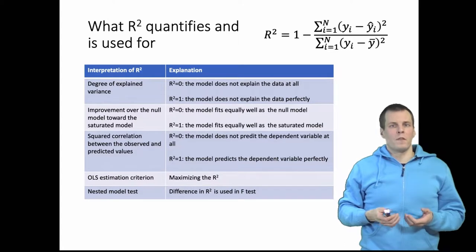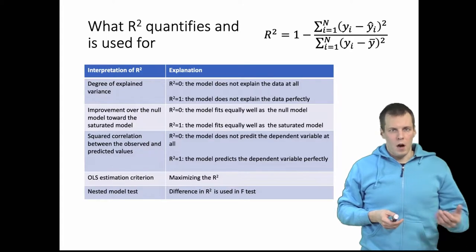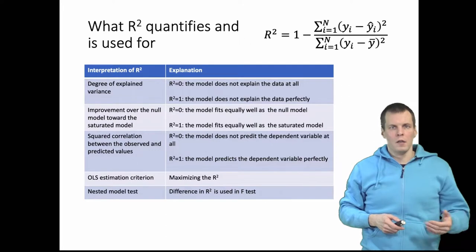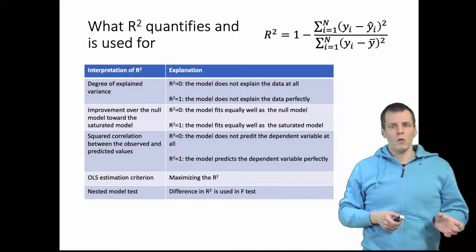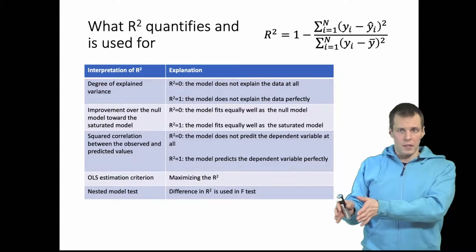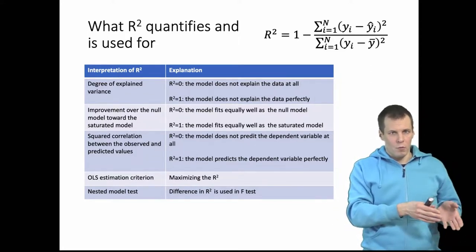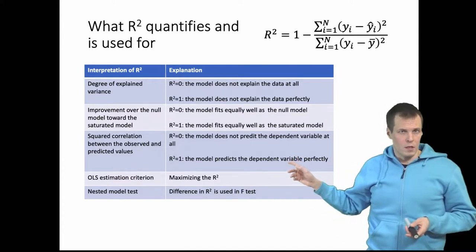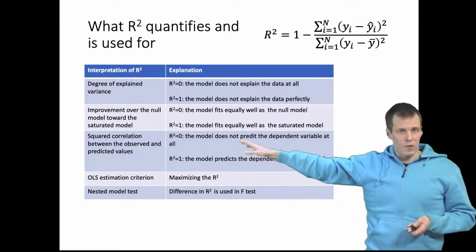R squared has a couple of different roles. It can quantify the amount of variance explained in the data — if R squared is 0, the model explains no variance; if R squared is 1, it explains all variance. R squared also quantifies model fit: a value of 1 means a perfect fit, while 0 means it's equivalent to the null model. A third interpretation is how well the predictions from the model correlate with the actual observed values.